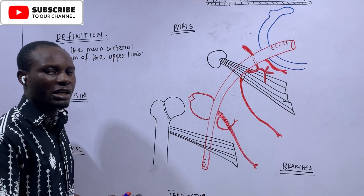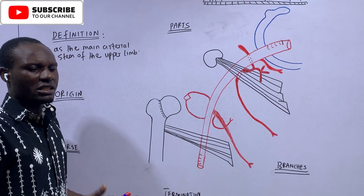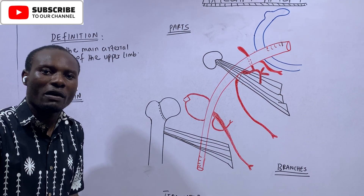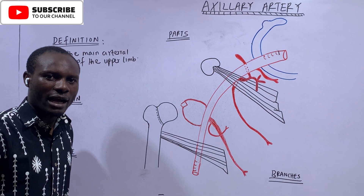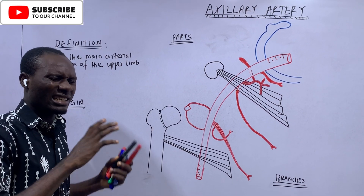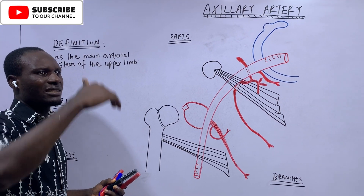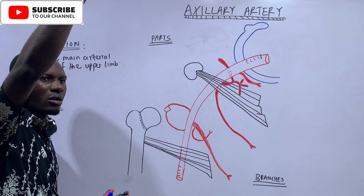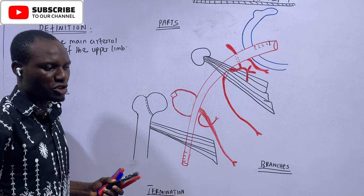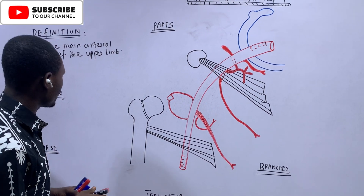The axillary artery will continue as the brachial artery. The brachial artery will continue as the radial and the ulnar arteries. The radial and ulnar arteries will form the superficial and deep palmar arches in the hand. That is the main trunk that gives rise to every other blood supply in the upper extremity — that's the axillary artery.